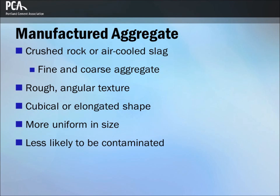Manufactured aggregate is produced by crushing parent rock at stone crushing plants. Crushed air-cooled blast furnace slag is also used as fine or coarse aggregate. As a result of the crushing operation, manufactured aggregates often have a rough surface texture, are more angular in nature, tend to be cubical or elongated in shape, and more uniform in size. Manufactured aggregates are less likely than gravel and sand to be contaminated by deleterious substances such as clay minerals or organic matter.